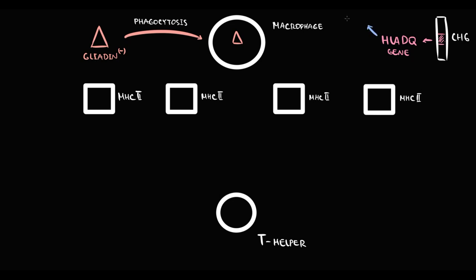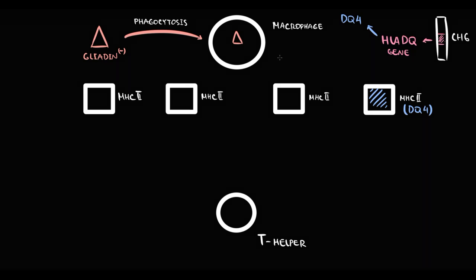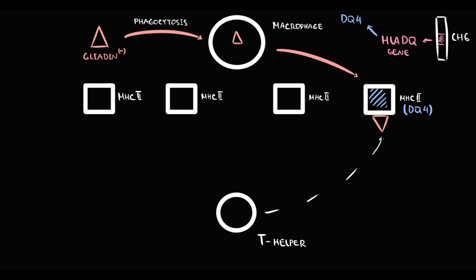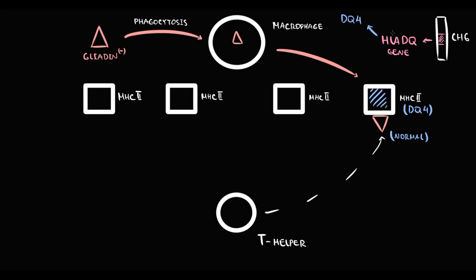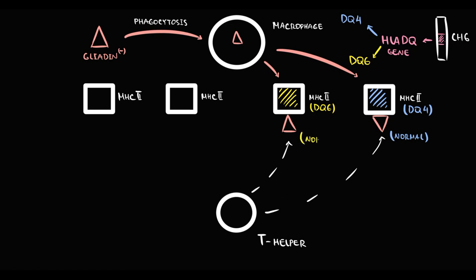For example, if a person has the HLA-DQ4 allele, their MHC2 receptor is made based on that genetic information and presents gliadin in a perfectly normal way. When T-helpers encounter this receptor, they recognize gliadin as a normal substance and see no danger. Similarly, a person with the HLA-DQ6 allele will have an MHC2 receptor that also presents gliadin normally, resulting in no inflammatory response.